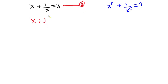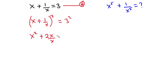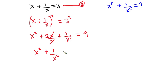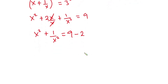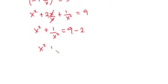So we have (x plus 1 over x) squared, and this is equal to 3 squared. Expanding this, we have x squared plus 2 times x over x plus 1 over x squared, and this is equal to 9. The x cancels, so we have x squared plus 1 over x squared equals 9 minus 2, which gives us x squared plus 1 over x squared is equal to 7.